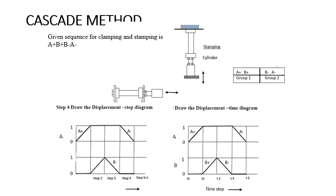In the previous video we observed the signal conflict. The signal conflict occurs to achieve the sequence A-plus, B-plus, B-minus, A-minus. The memory valve — a double pilot-operated memory valve — is getting a signal at a time from both sides, making it difficult to switch over. That signal conflict is going to be avoided by using the cascade method. To eliminate the signal conflict, the cascade method was introduced.